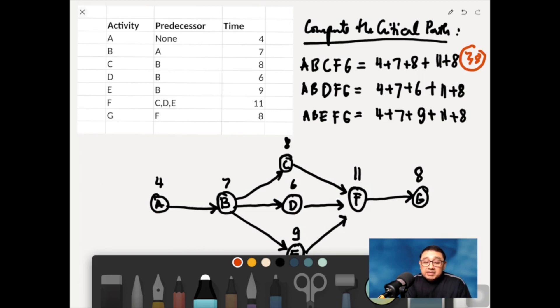And then 4 plus 7 is 11, plus 6. That's 17, plus 11, is 28. And then 8. Add 8. That's 36.